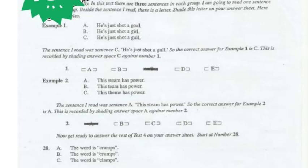Test 4. Listen carefully. In this test, there are three sentences in each group. I am going to read one sentence from each group. Inside the sentence I read, there is a letter. Shade this letter on your answer sheet. Here are two examples.